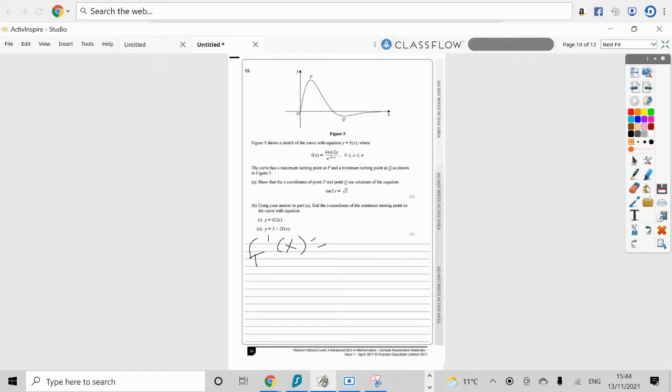Now, the quotient rule states that we've got to square the bottom, as well as dealing with the top. So that will be e to the root 2x minus 1, multiplied by the derivative of the top, which is 8 cosine 2x.